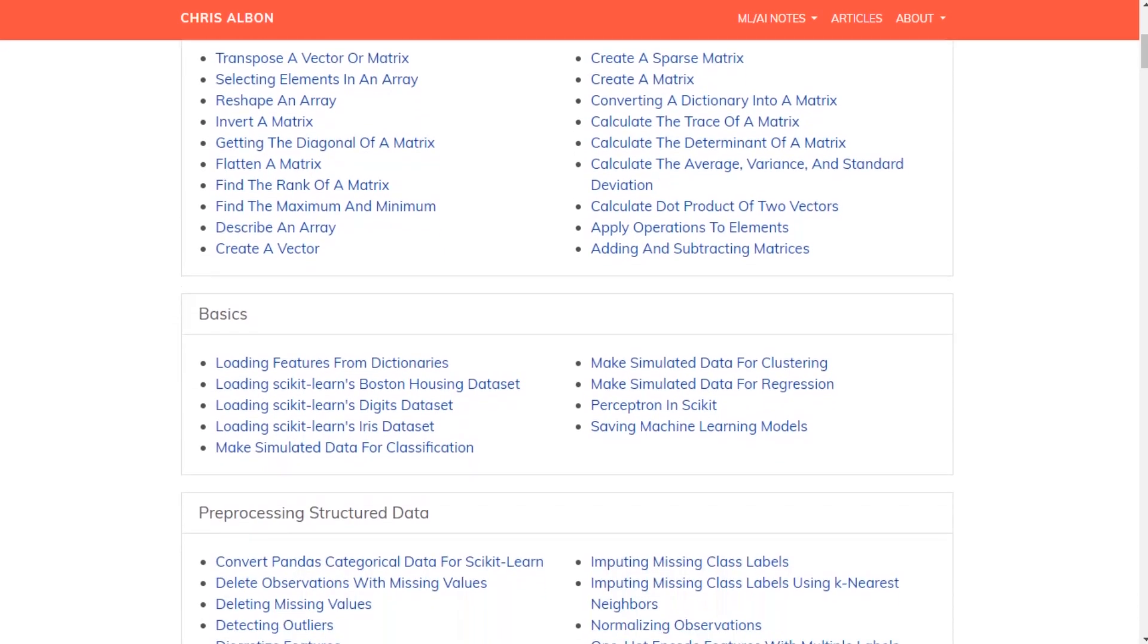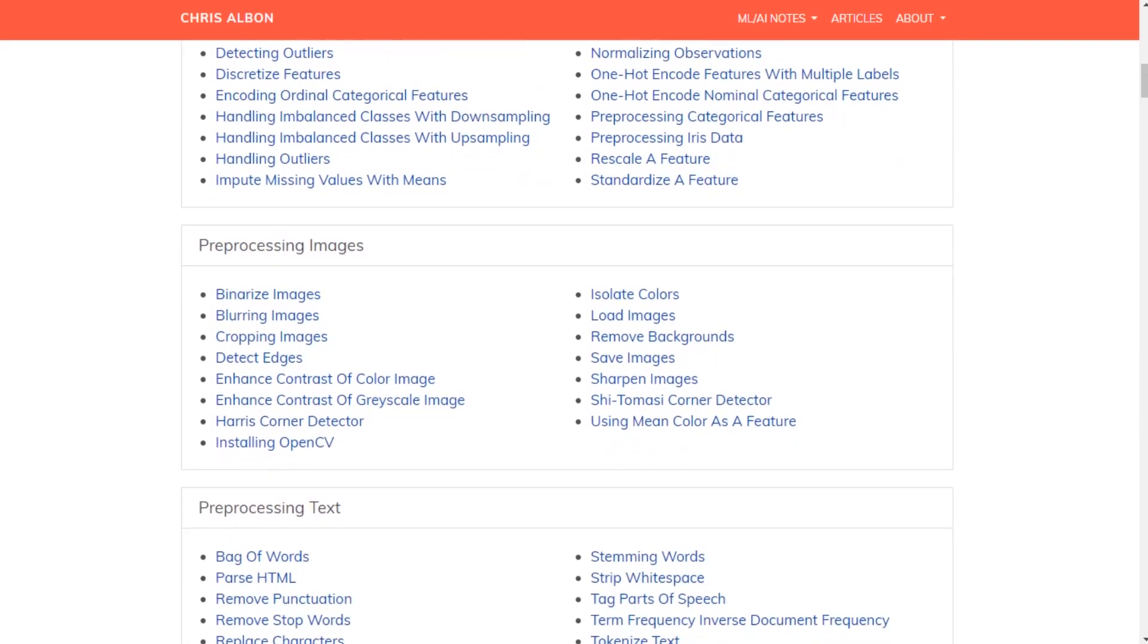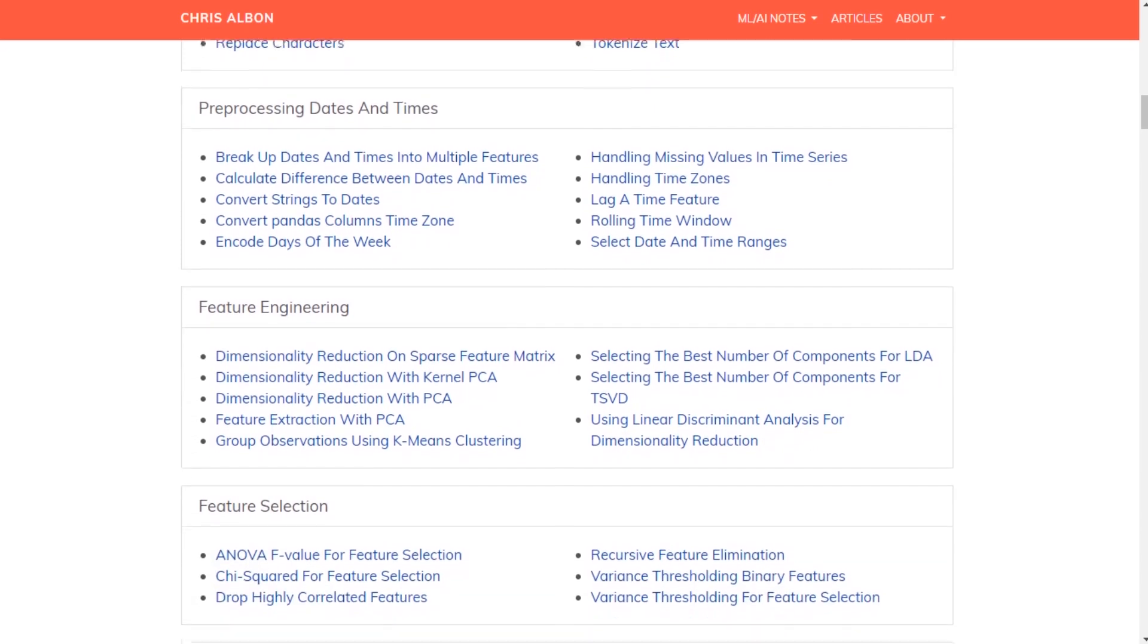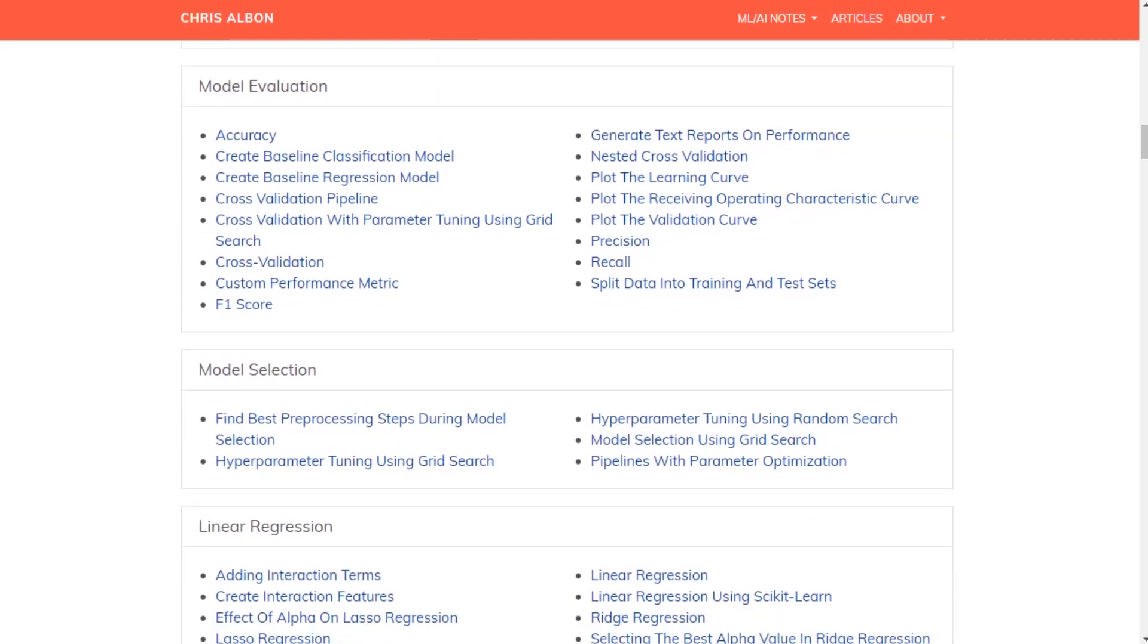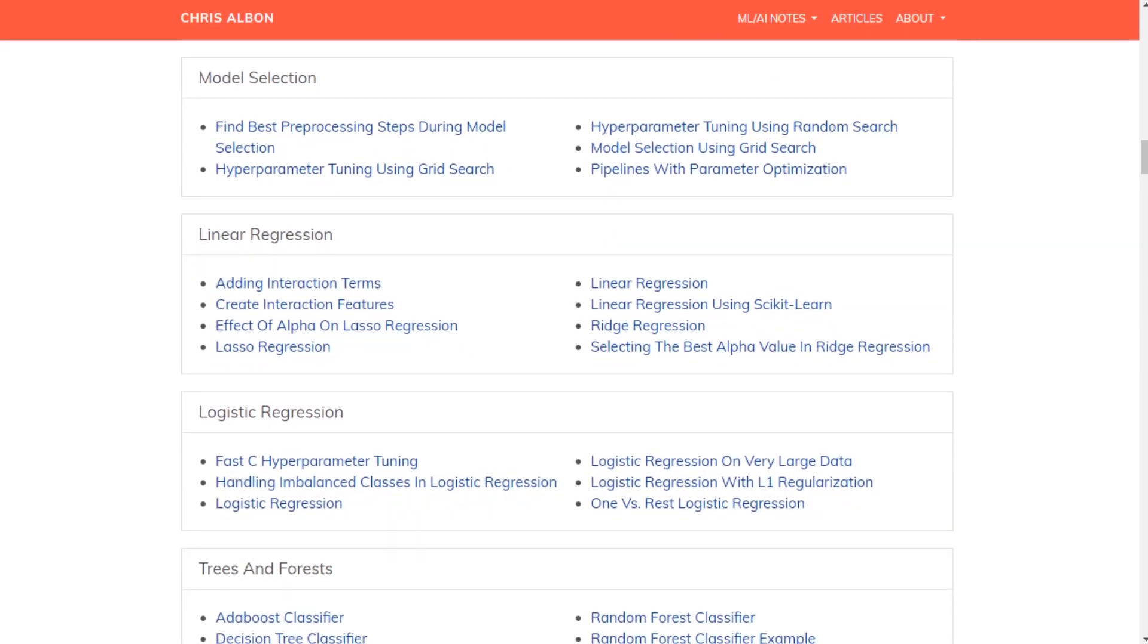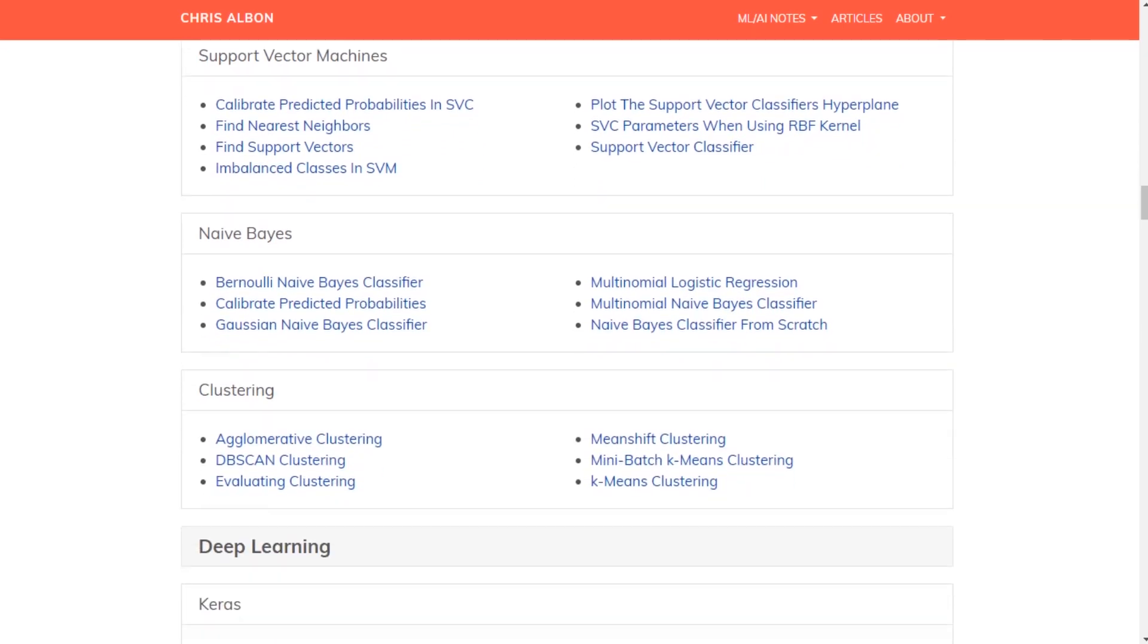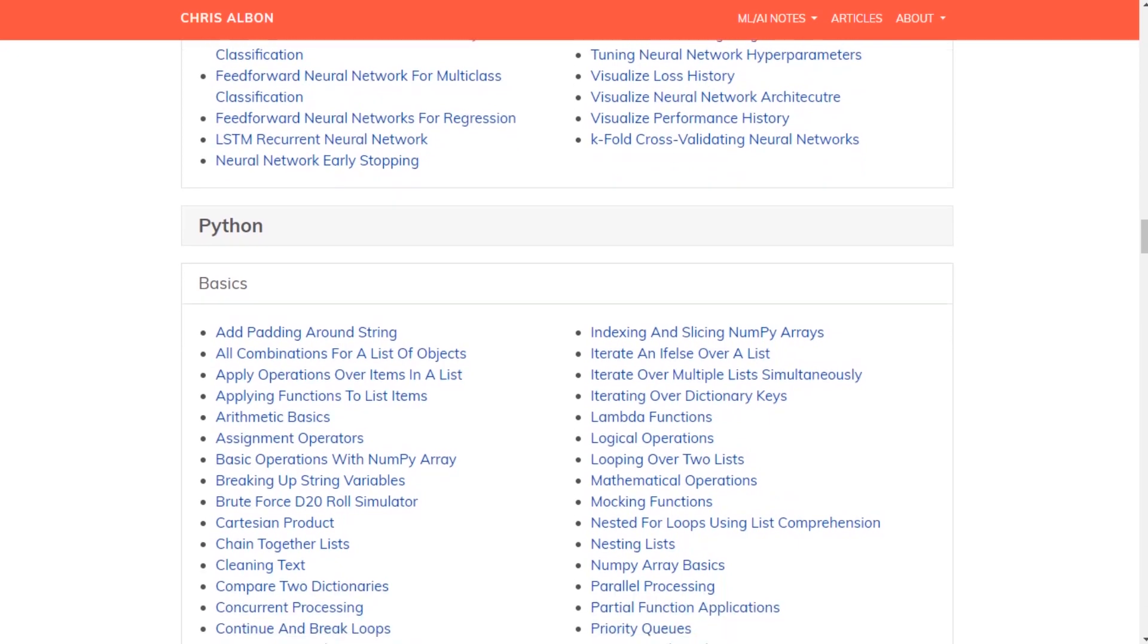May it be for a transposition of a matrix, may it be for feature engineering, may it be for scaling, may it be for training and testing of your models, may it be for image processing. This guy provides you source code and nothing else. I mean that is what you need in your project. So I would call it as a GitHub for machine learning where you can find almost all source code for your machine learning project.